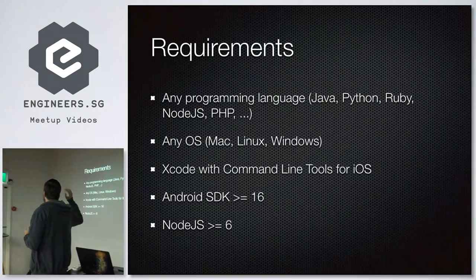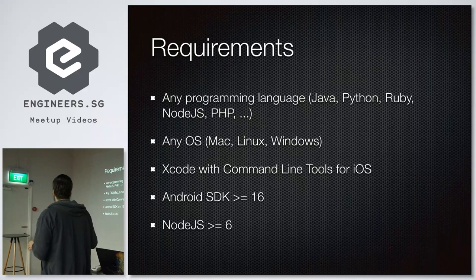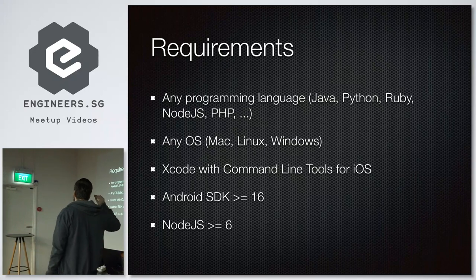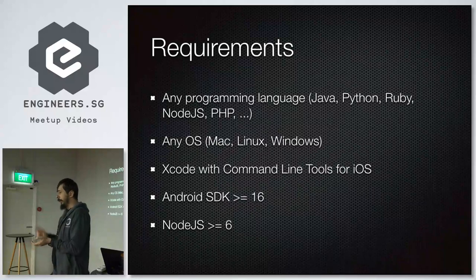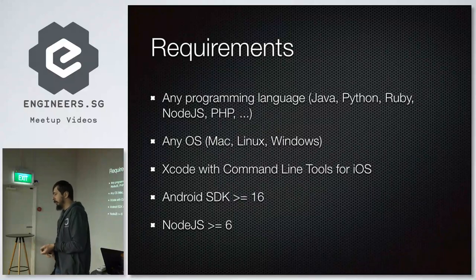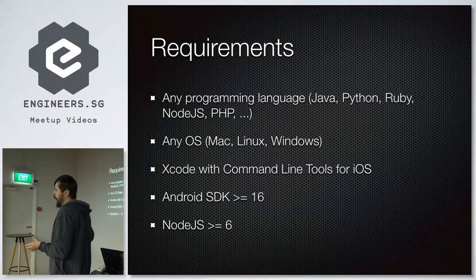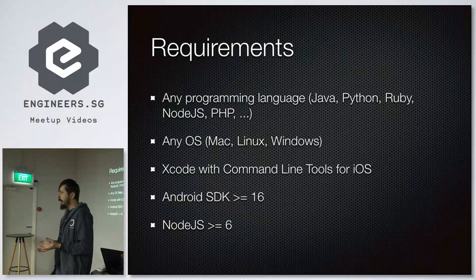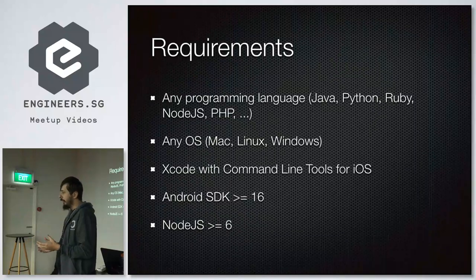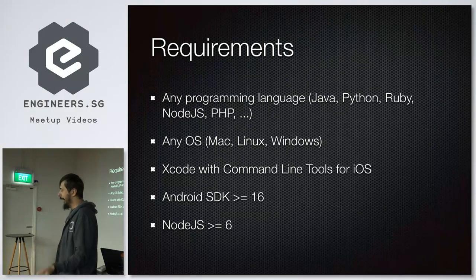Requirements: any programming language — Java, Ruby, Python, anything you want. Any operating system: Appium works on macOS, Linux, and Windows. Currently I'm using only Mac because I'm doing testing for both Android and iOS, and with iOS you can't move away from Mac — you always need Xcode.